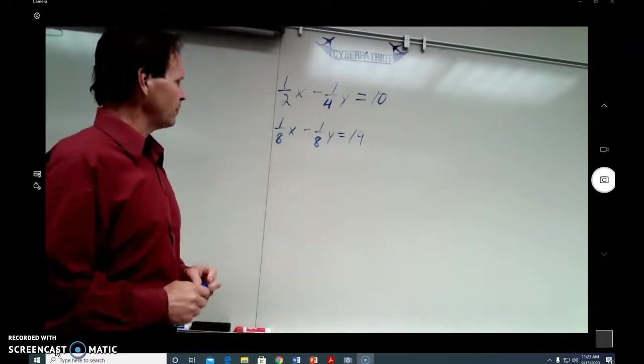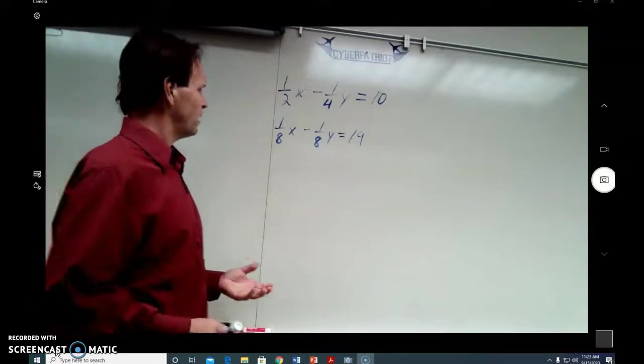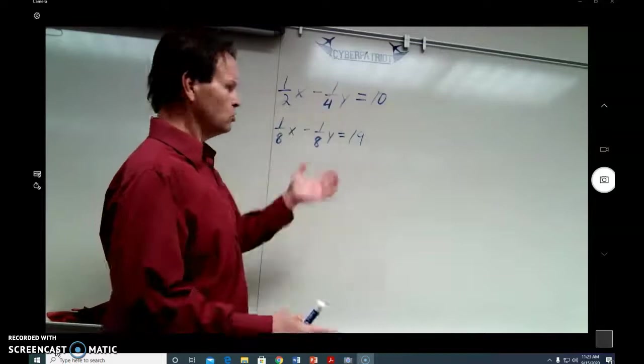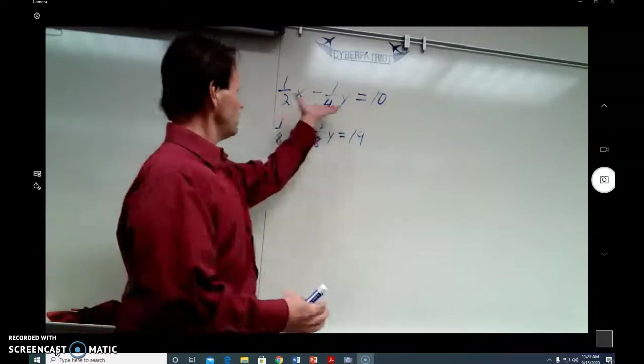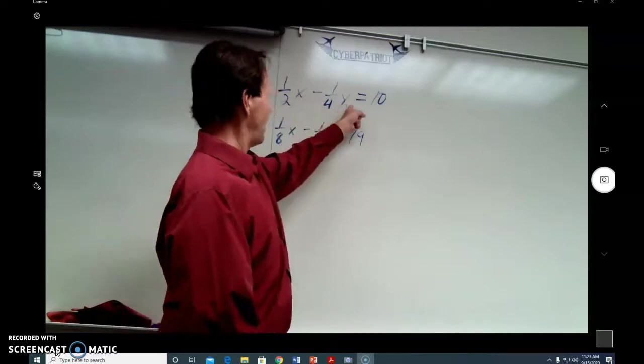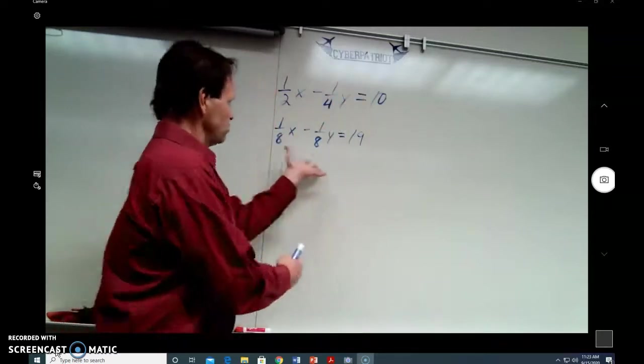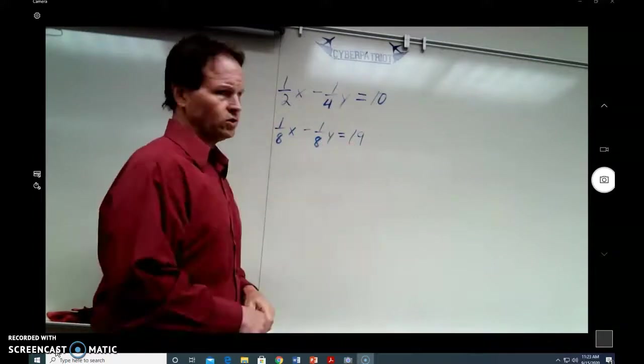You may recall from our previous discussions that we can tell this is going to be a system of equations because there are two variables. If there are two or more variables, we cannot solve an individual equation. When there's both an x and a y, we can't figure out what either one is without using the second equation below.